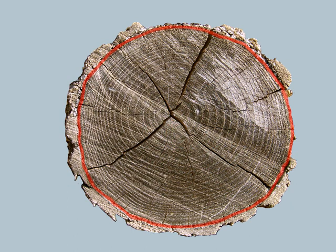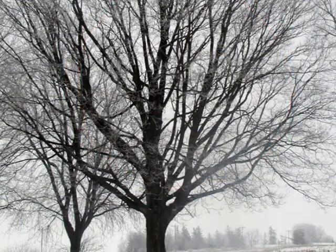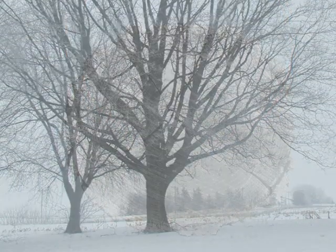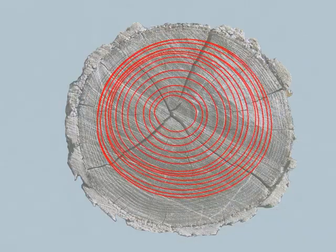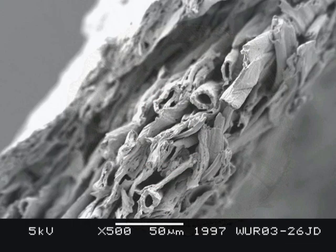The cambium is beneath the bark. It is the growing layer of the tree. The tree does not grow in the winter. That gives the so-called annual rings. A complex substance holds the fibres together: lignin.